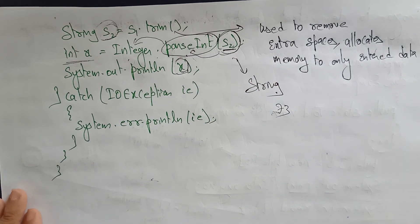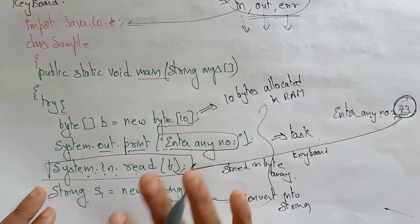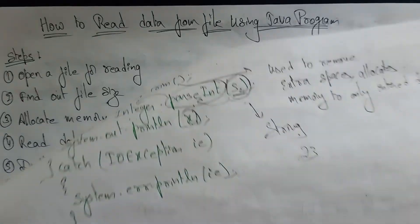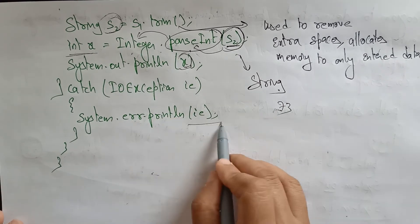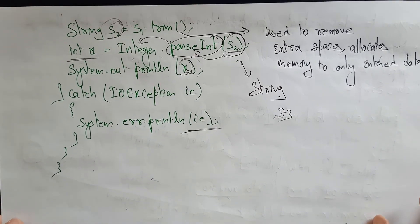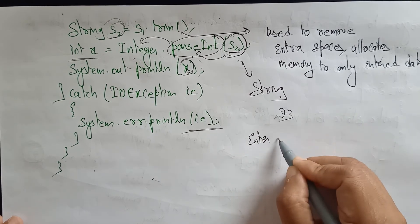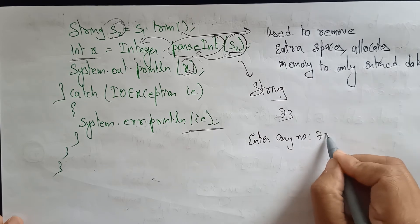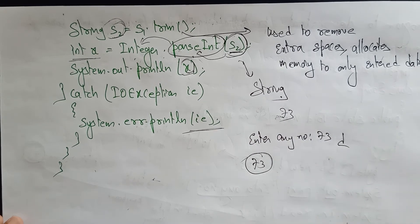Suppose any exception occurs — suppose you didn't enter the data, or you entered a space, or made some mistake — then it throws an IOException. Input-output exception will be thrown. So whatever you enter in the command prompt, 'Enter any number' is displayed. You enter 73, press enter, and 73 is displayed.